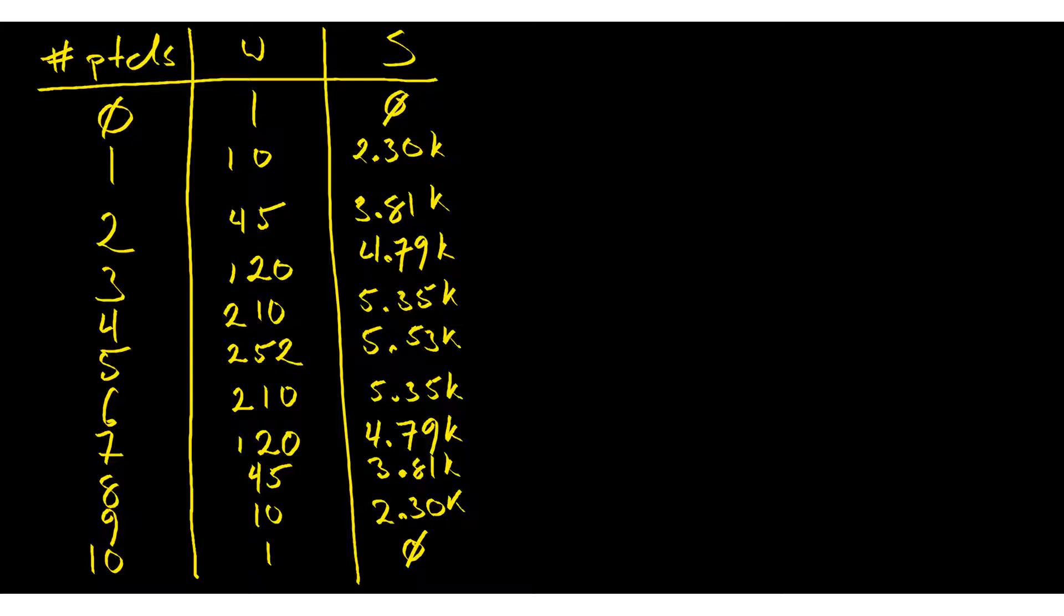Entropy starts out low, one possibility, so entropy of 0. Then you go up to 10, W equals 10, then 45, 120, 210, 252. And that's where you get an oddity. At five particles, you have the maximum number of ways of arranging the system. And then it starts going back down, 210, 120, 45, 10, and 1. So entropy reaches a maximum there. Why is that?